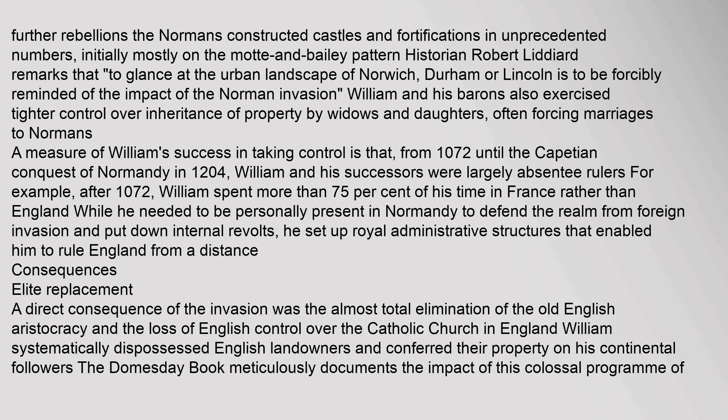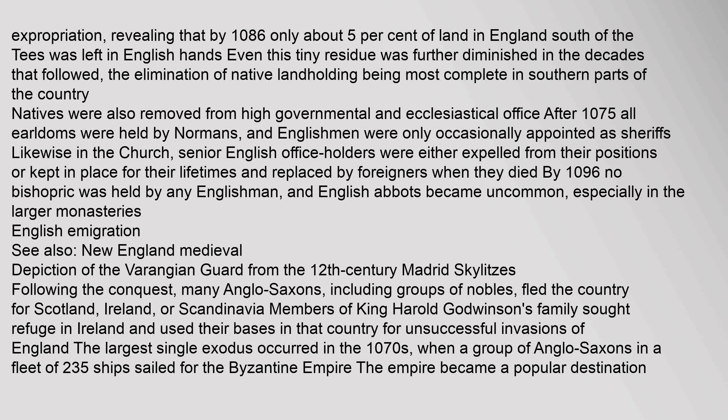A direct consequence of the invasion was the almost total elimination of the old English aristocracy and the loss of English control over the Catholic Church in England. William systematically dispossessed English landowners and conferred their property on his continental followers. The Domesday Book meticulously documents the impact of this colossal program of expropriation, revealing that by 1086 only about 5% of land in England south of the Tees was left in English hands. Even this tiny residue was further diminished in the decades that followed. Natives were also removed from high governmental and ecclesiastical office; after 1075, all earldoms were held by Normans, and Englishmen were only occasionally appointed as sheriffs. By 1096, no bishopric was held by any Englishman, and English abbots became uncommon, especially in the larger monasteries.